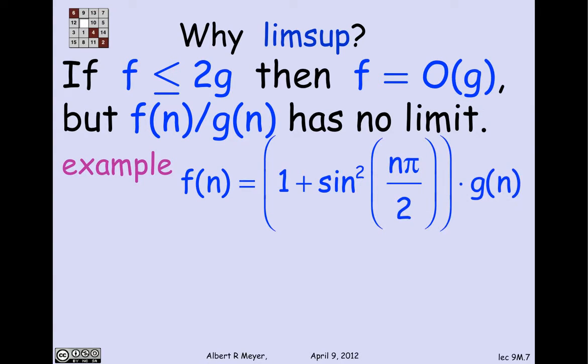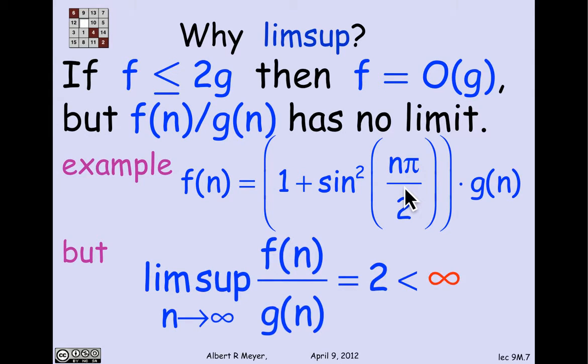Suppose that f is in fact equal to g times a number that varies between 1 and 2. That's an example where sine of n pi over 2 varies between 0, 1, and minus 1. And you square it, it becomes 0 or 1. And you add 1 to it, it becomes 1 or 2. So this is an expression which, as n grows, alternates between the values 1 and 2. And I'm multiplying g of n by this factor that's either 1 or 2. But the limit of f of n over g of n does not exist. It's alternating between 1 and 2.